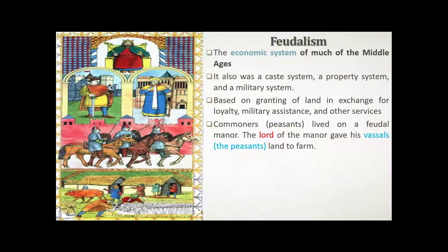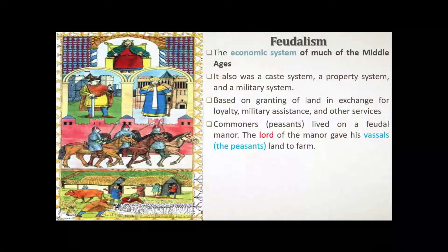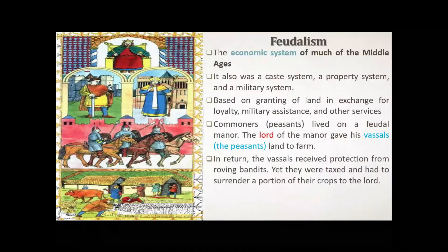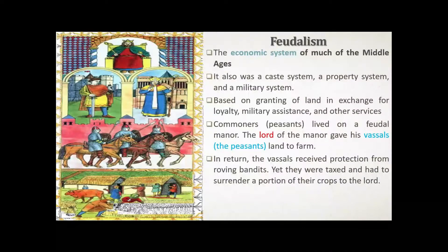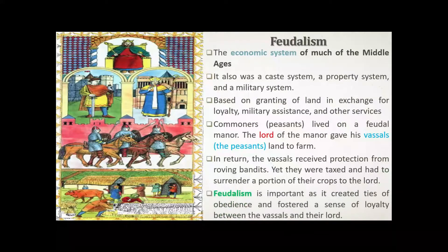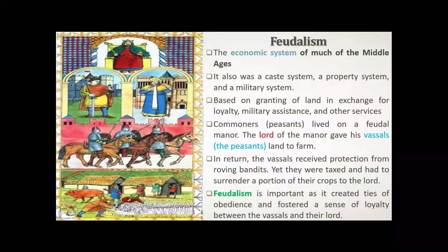Commoners and peasants lived on a feudal manor. The lord of the manor gave his vassals land to farm; in return, the vassals received protection from roving bandits, yet they were taxed and had to surrender a portion of their crops to the lord. Feudalism created ties of obedience and fostered a sense of loyalty between the vassals and their lord.